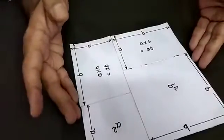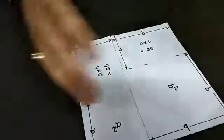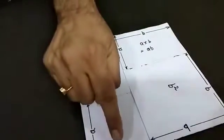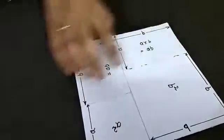After adding all these, fitting all these, we are getting a square with side a+b.